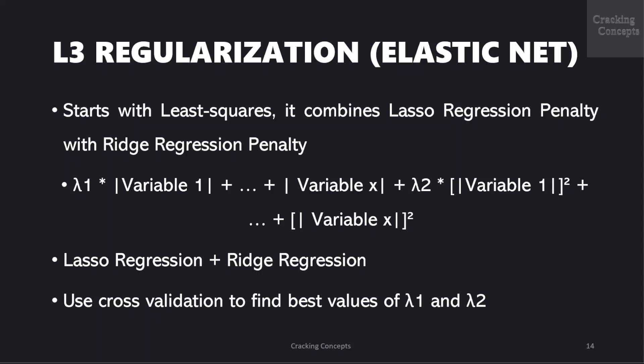As in the previous regression cases it starts with the least squares and combines lasso regression penalty with ridge regression penalty which is given by lambda 1 into absolute values of variables 1 to x plus lambda 2 into the sum of squared of variables from 1 to x. This is also given as lasso regression plus ridge regression. Now we can use cross validation on different combinations of lambda 1 and lambda 2 to find the best value.